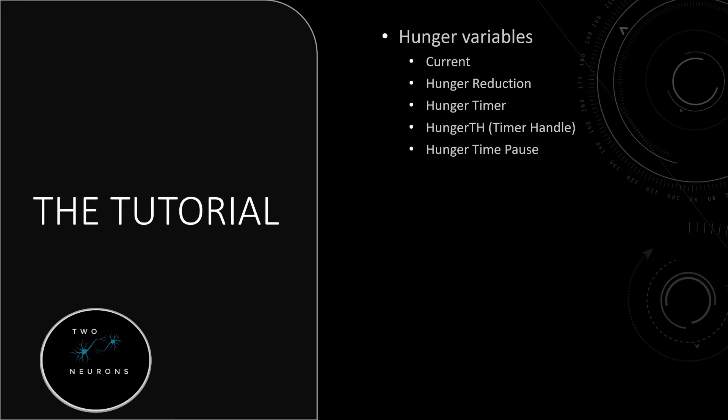The hunger system will have a zero to a hundred range on the hunger variable, where a hundred equals fullness and zero equals an empty stomach. So it's an inverse meaning — the higher the hunger value, the less hungry the character actually is. The lower the hunger value, the more hungry the character is. We can think of the hunger variable more as a fullness variable.